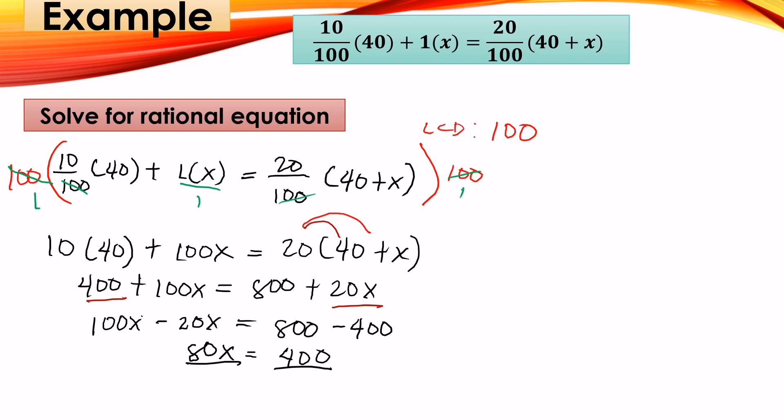Then divide both sides by 80, so x equals 400 divided by 80, which is 5. So the answer is 5 liters that we need to add to the original.